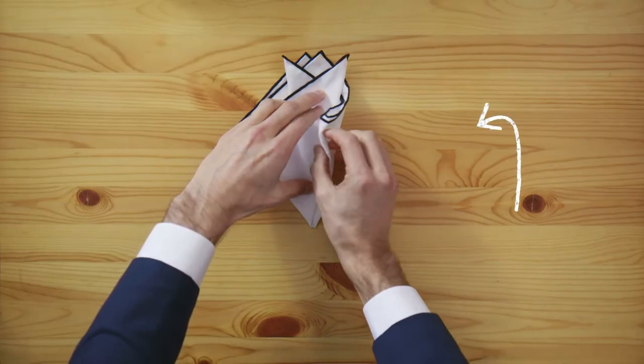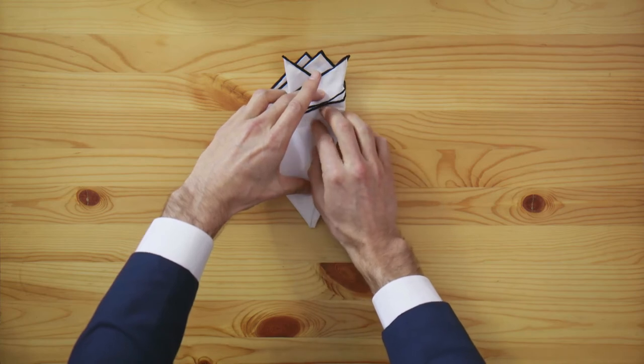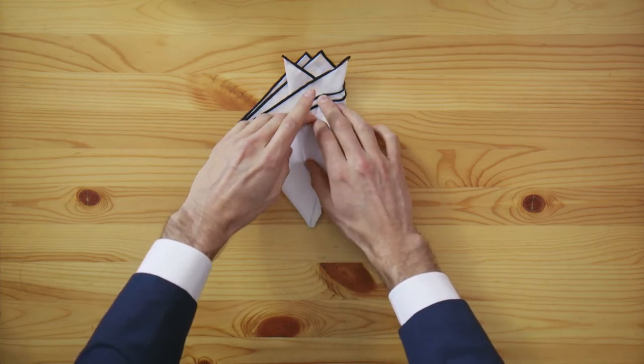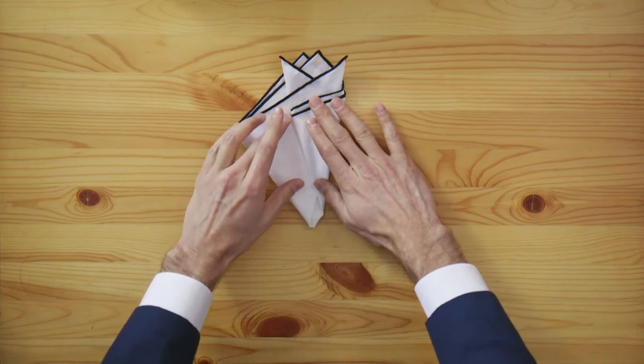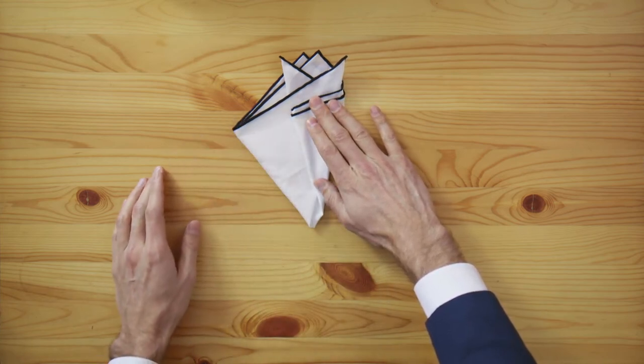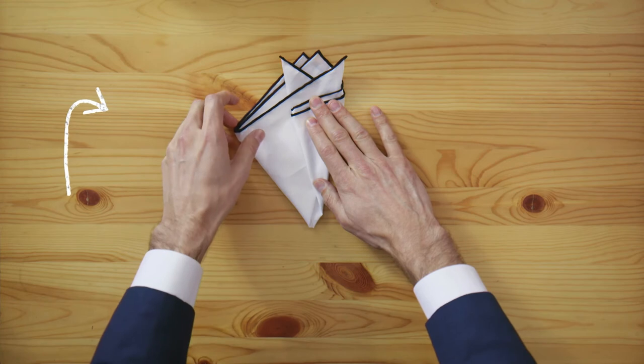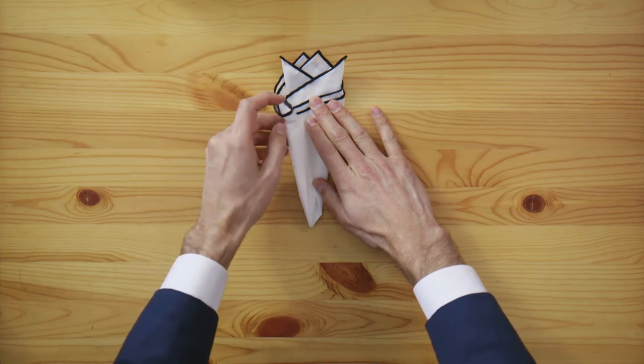Take the right corner and fold it into the center. Take the left corner and fold it all the way to the right to create a cone.